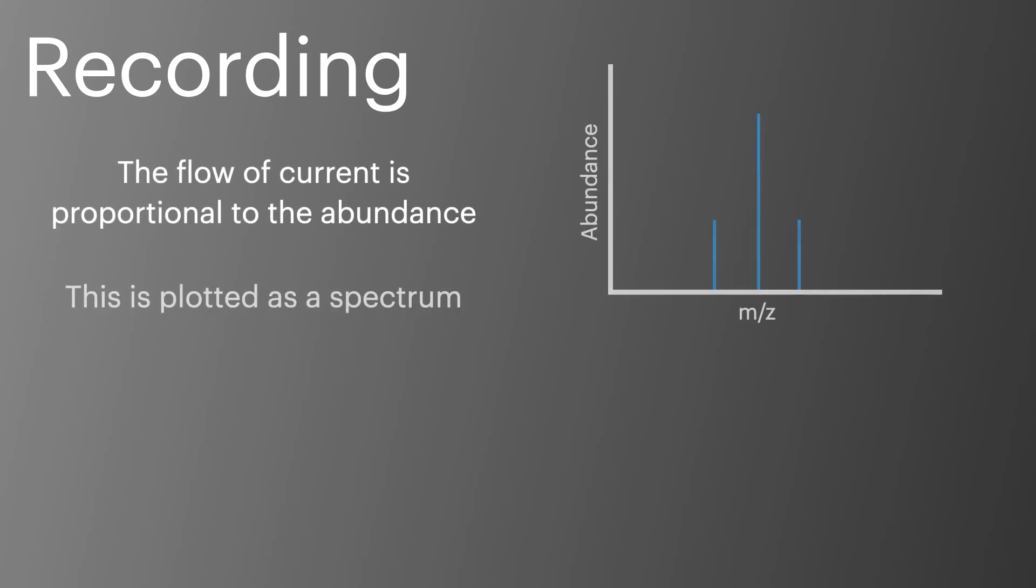The final output from the mass spectrometer is a mass spectrum. This takes the flow of the current and turns it into an abundance, and plots it as a spectrum.